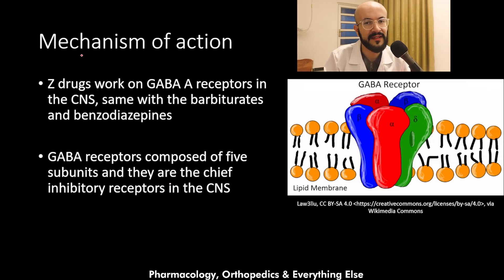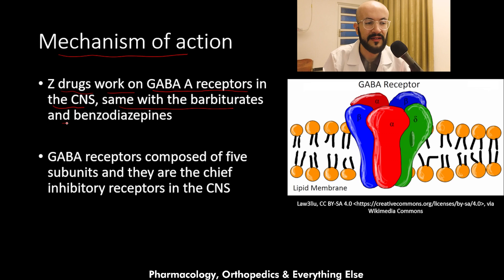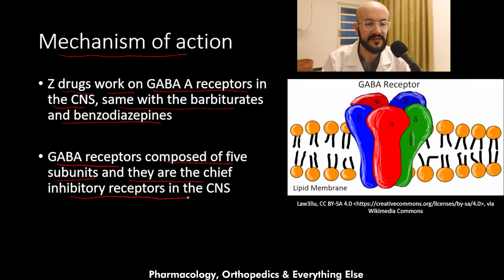Regarding the mechanism of action, the Z-drugs work on the GABA-A receptors in the central nervous system, same as the barbiturates and the benzodiazepines. The GABA receptors are composed of five subunits, and they are the chief inhibitory receptors in the central nervous system.